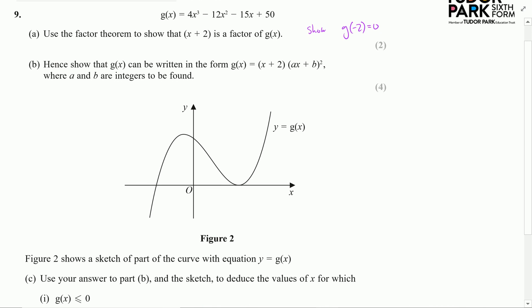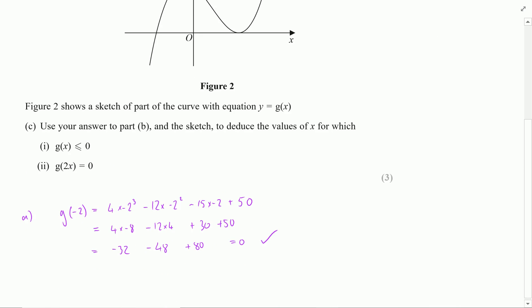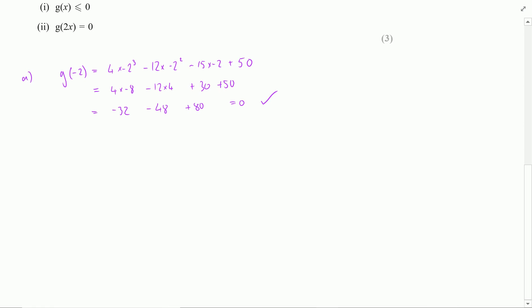The second part of this question will hence show that we can write g in this format where we've got a repeated root where a and b are integers to be found. My chosen method for doing this would be polynomial long division.